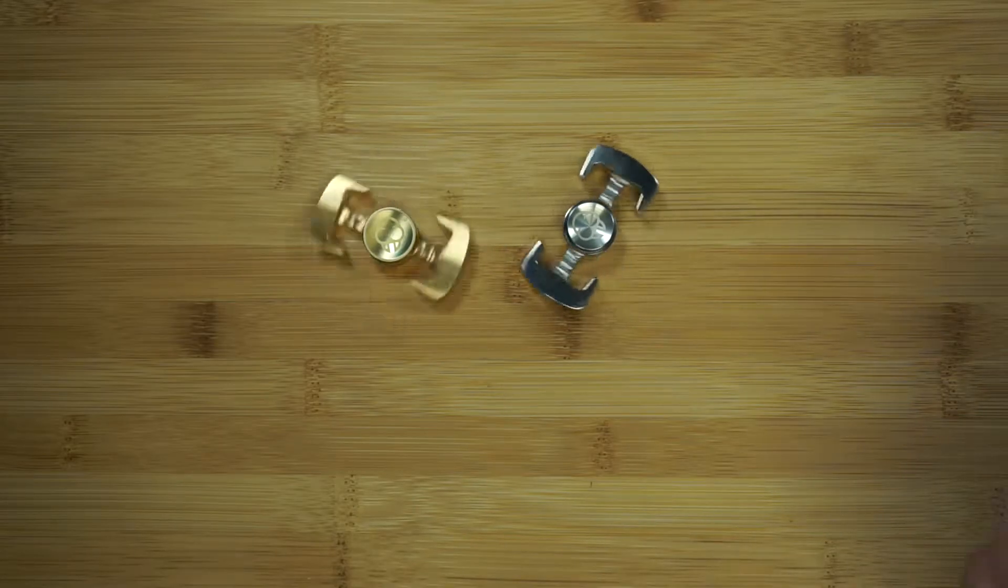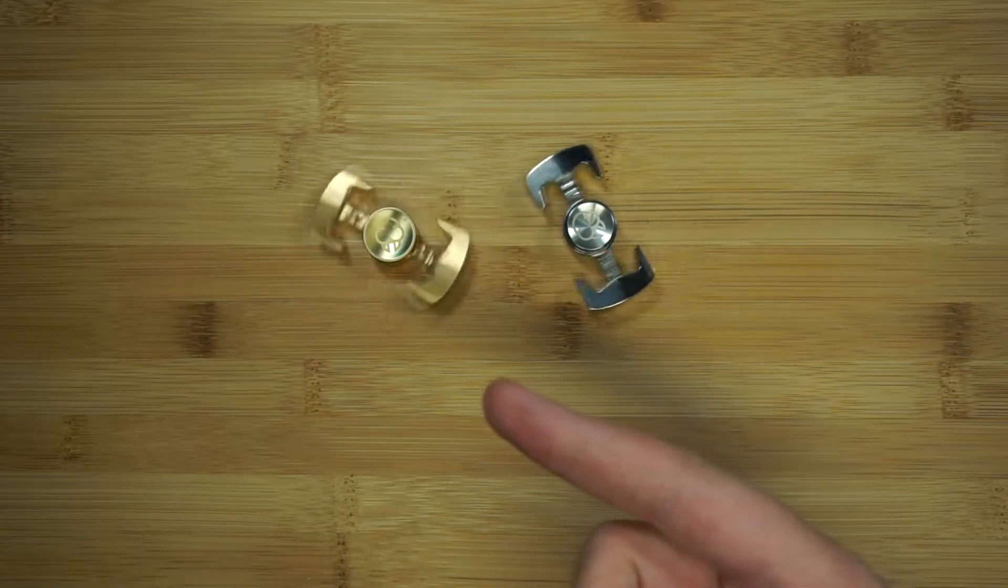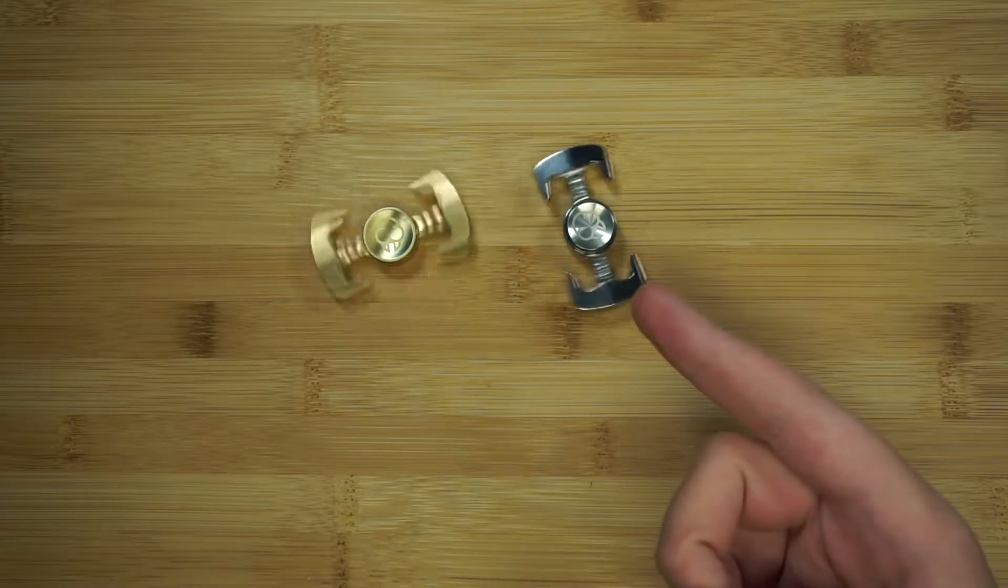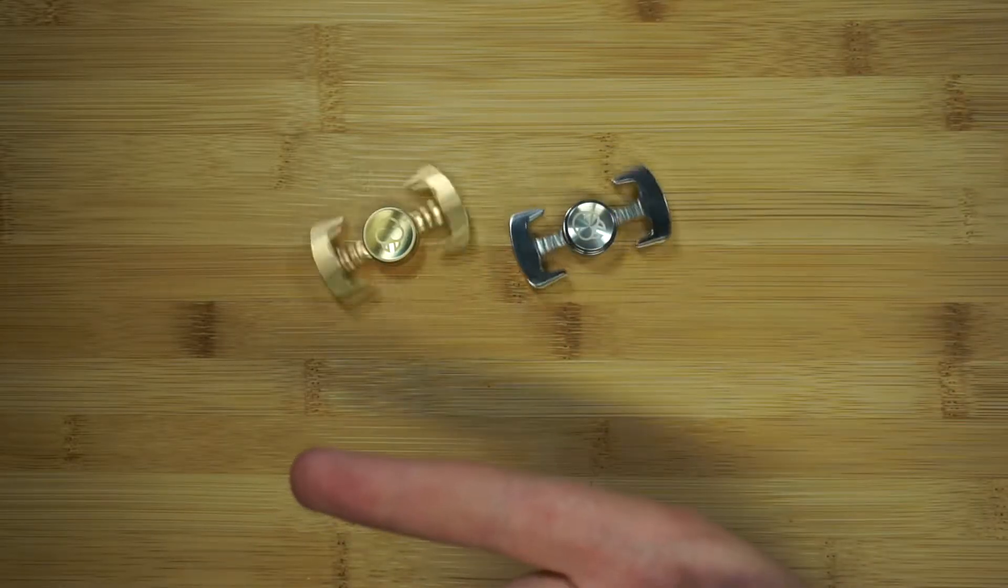What's going on YouTube, Dave back again and today we're taking a look at the TIE Fighter in Brass and Stainless Steel from Laughing Walrus. Roll the intro.